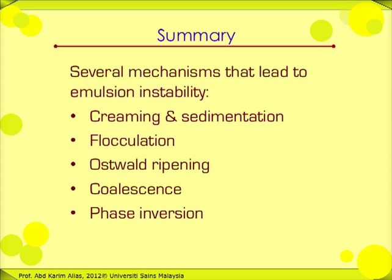In summary, there are several mechanisms that could destabilize an emulsion. These are: creaming and sedimentation, flocculation, Ostwald ripening, coalescence, and phase inversion.